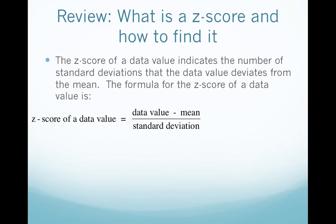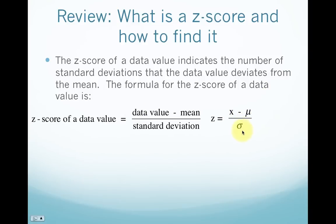When you do this on the calculator, make sure if you choose to do it in one step that you wrap the numerator in parentheses so the order of operations is maintained. In symbols, for a population, we have x minus mu over sigma.